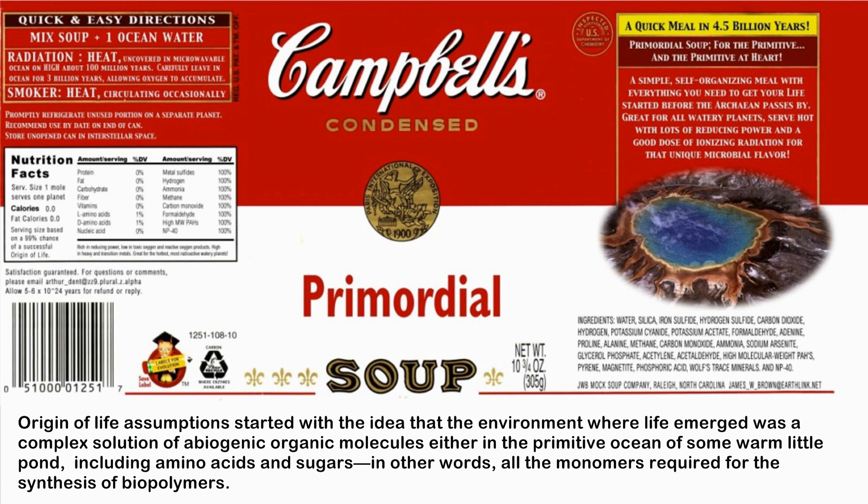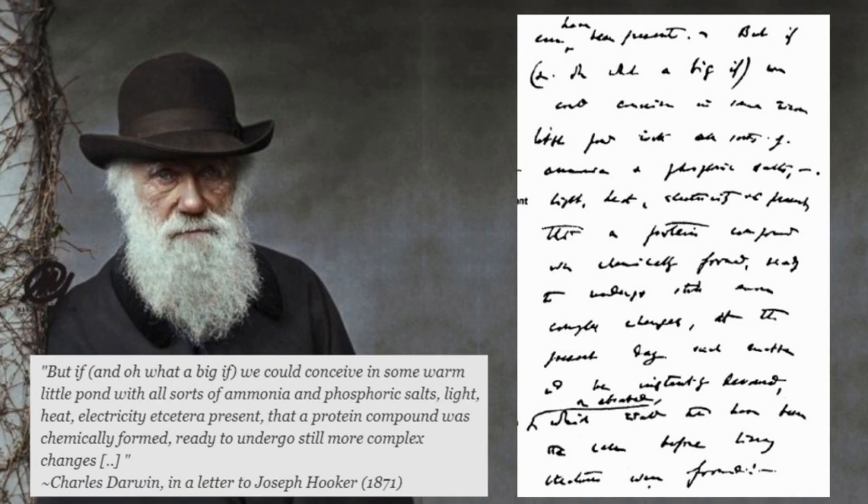Origin of life assumptions started with the idea that the environment where life emerged was a complex solution of abiogenic organic molecules, either in the primitive ocean or some warm little pond, including amino acids and sugars — in other words, all the monomers required for the synthesis of biopolymers.